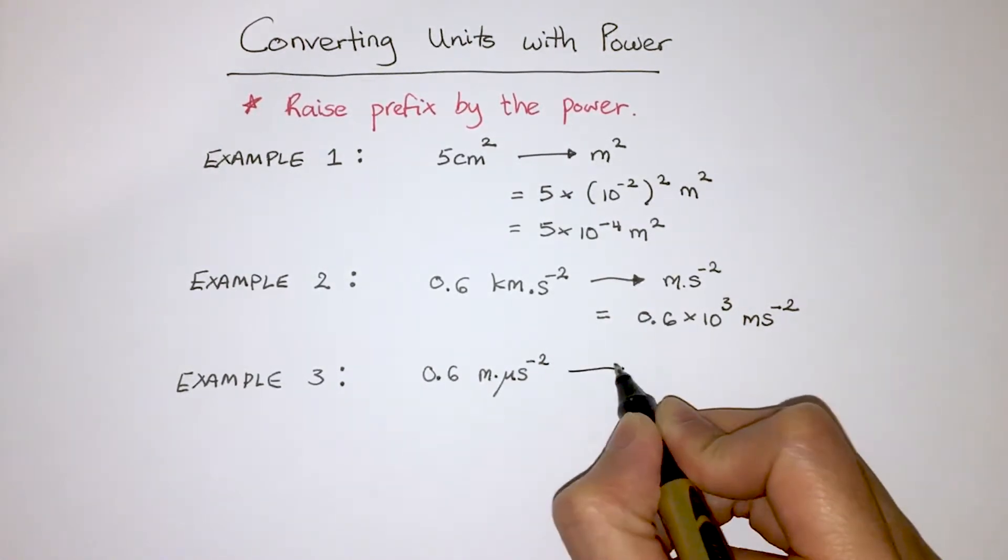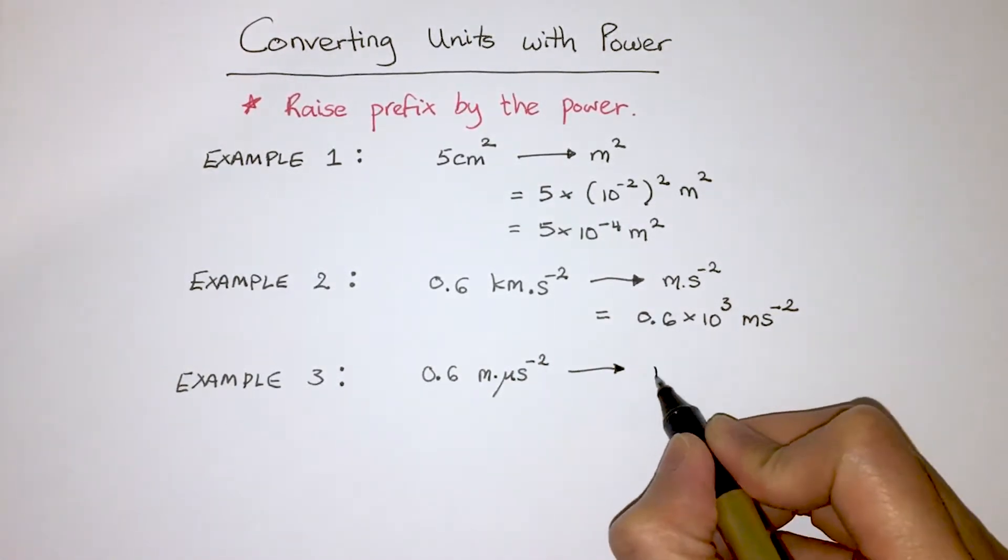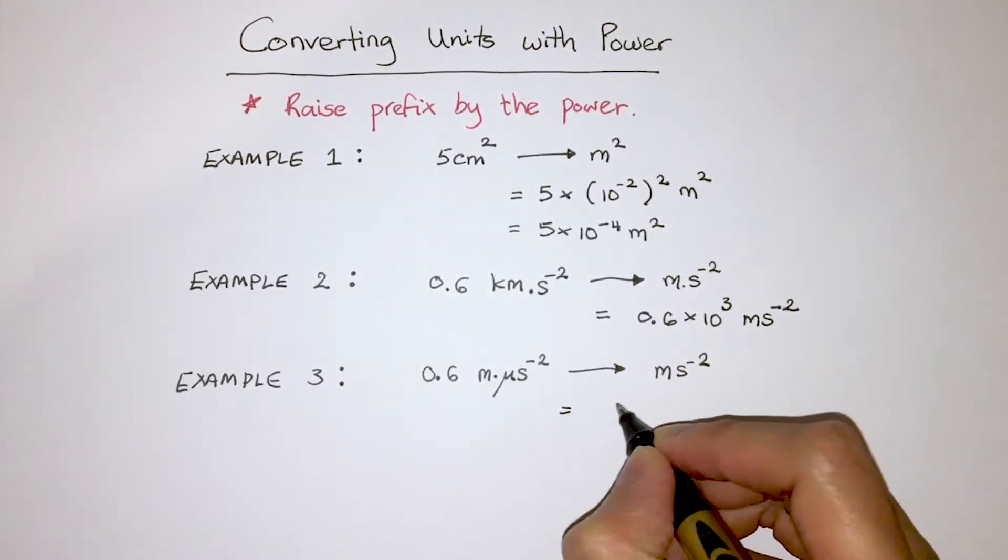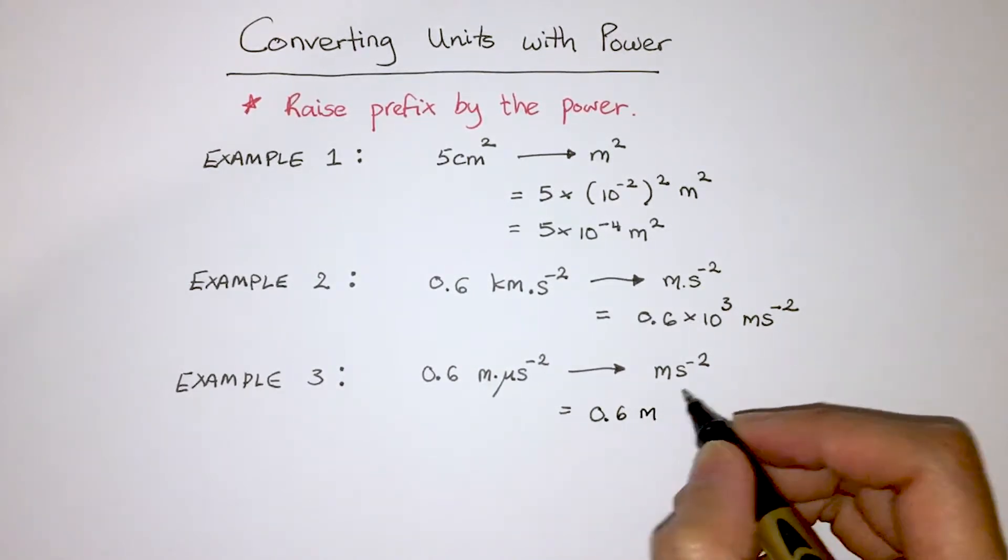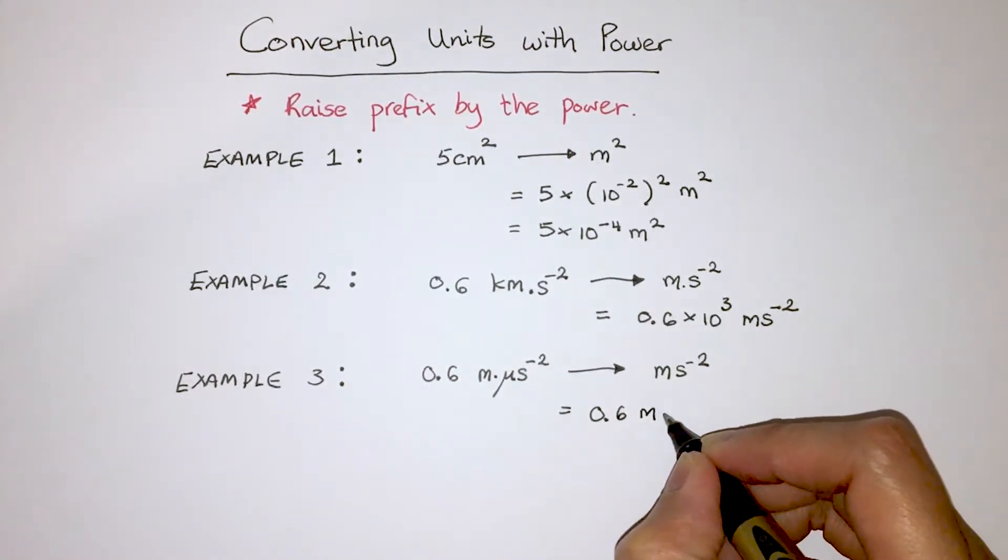And we want to convert that into meter second to the minus 2. So this time, micro is where we have to apply the power of minus 2. Because it's the unit of time here, microsecond, that is being raised to the power of minus 2.